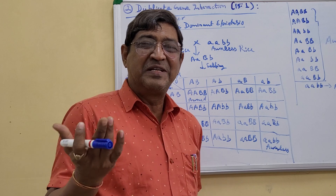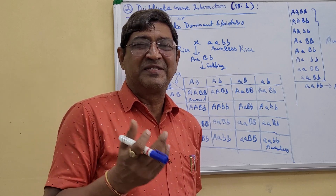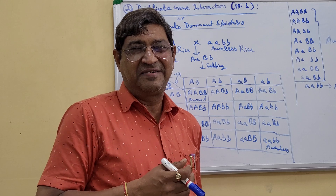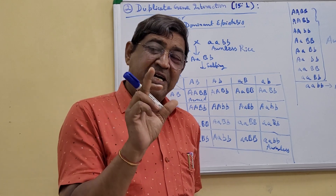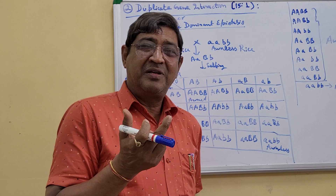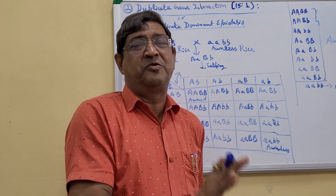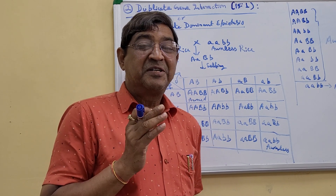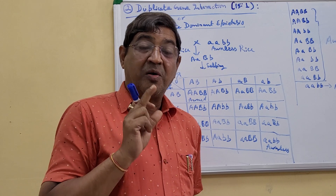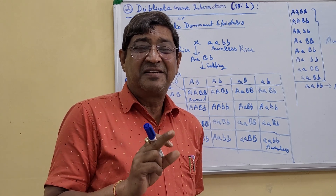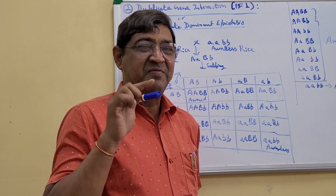Both genes are looking similar in phenotype — because many times you see identical twins, monozygotic twins are looking similar, they are duplicates of each other. Similarly, there are two genes, but both, if they are coming independently, are giving exactly the same phenotype. But they should be in dominant form — whether in homozygous or heterozygous — in both cases they are giving the same phenotype.